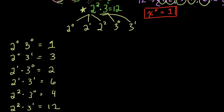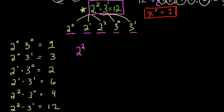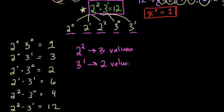Look at this in exponential form: 2 squared times 3 to the 1st. If you think of 2 squared, we said it has 3 different values you could pick. And with 3 to the 1st, it has 2 different values we could pick. So 2 squared gave us 3 different values to choose from, and 3 to the 1st gives us 2 different values to choose from. If in the first case you have 3 values and in the second case you have 2 values, then the total number of factors we can make is 3 times 2. You're just multiplying the number of ways we can combine the powers of each prime factor — 3 times 2 gives 6 total factors.